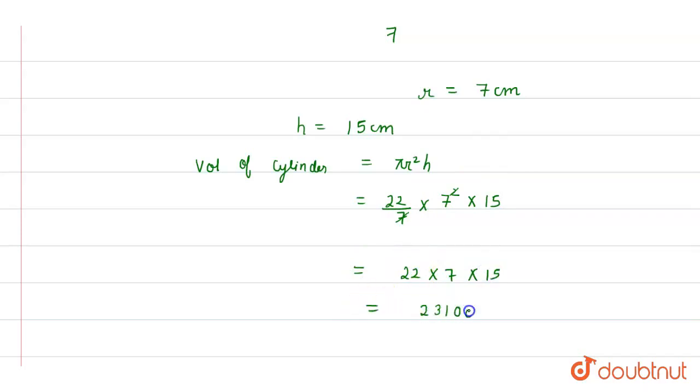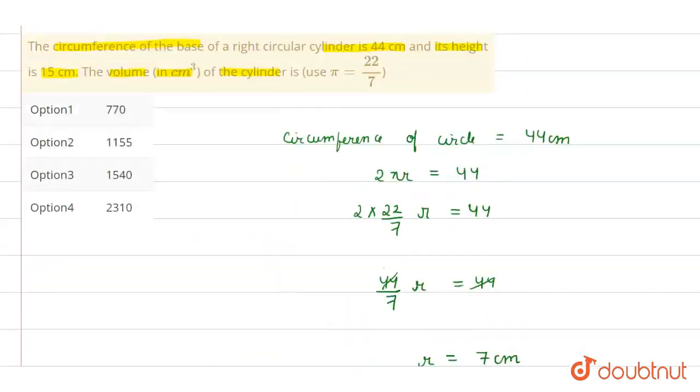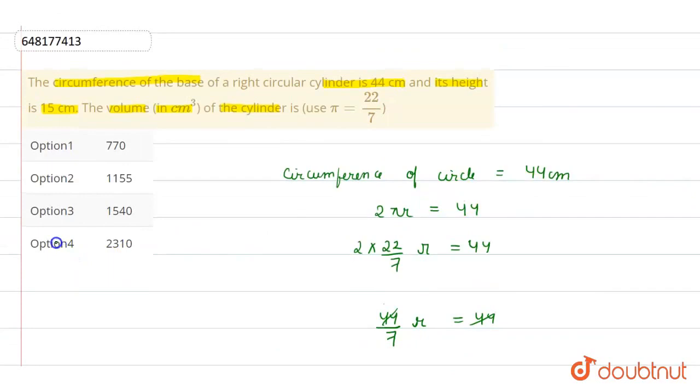The answer is 2310 cubic cm. The volume of the cylinder is 2310 cubic cm. Option 4 is 2310 cm³. Thank you.